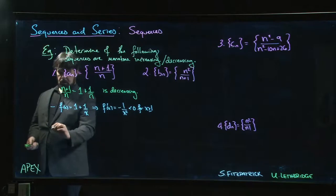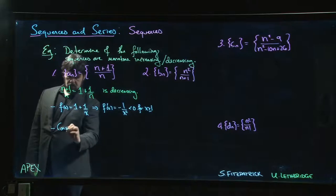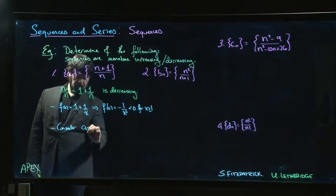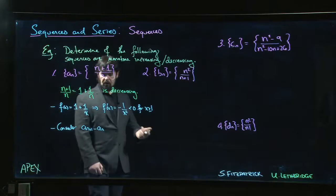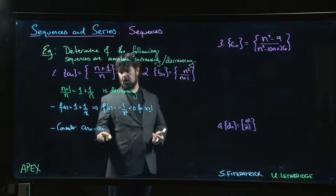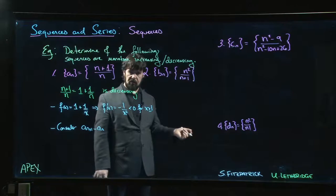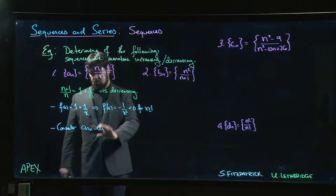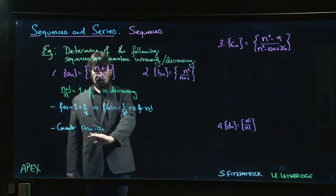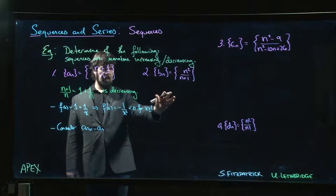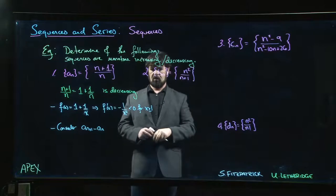The other way you can do it is you can consider the difference a_n plus 1 minus a_n. If our sequence is decreasing, then this term should be smaller than that term, so this difference should be negative. So we can try to show that that difference is negative. You can go ahead and try it, but we'll do it in the next one. It is done in the book. We'll apply it in the next one because we've got four examples to get through, and we don't want this video to get too long.